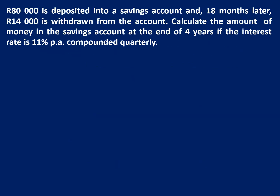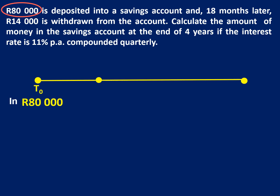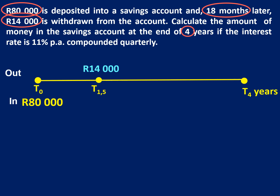In this next example, R80,000 is deposited into a savings account, and 18 months later R14,000 is withdrawn from the account. So now we have got money going out of the account after a year and a half. We need to calculate the amount of money in the savings account at the end of four years if the interest rate is 11% per annum, compounded quarterly. We are going to set up a timeline — it makes it easier to see how much time we have. So R80,000 goes in, but then R14,000 is withdrawn after a year and a half, and we want to know how much we have at the end of four years.